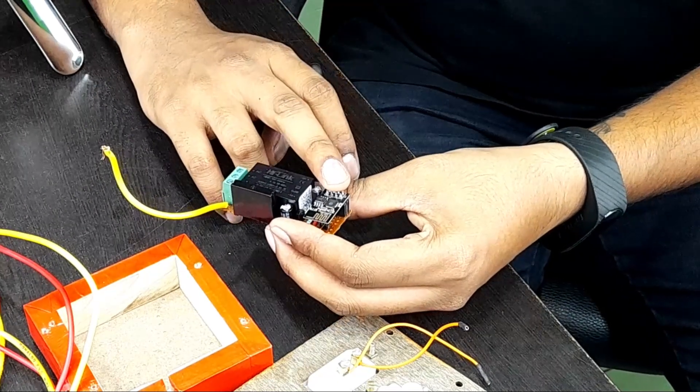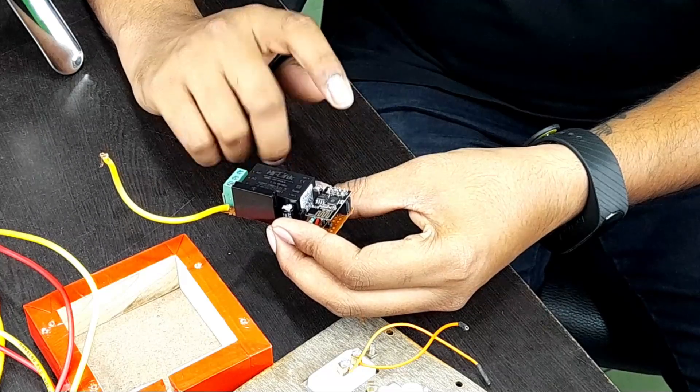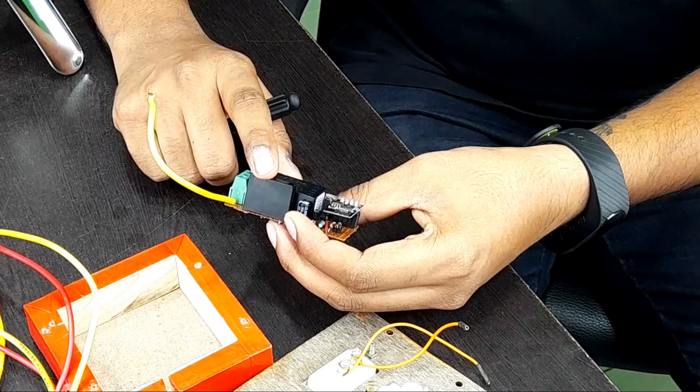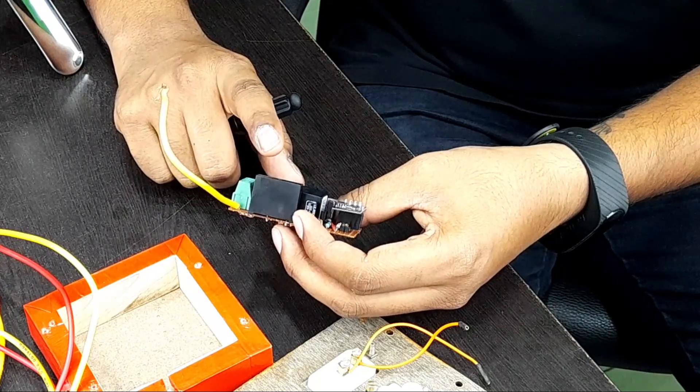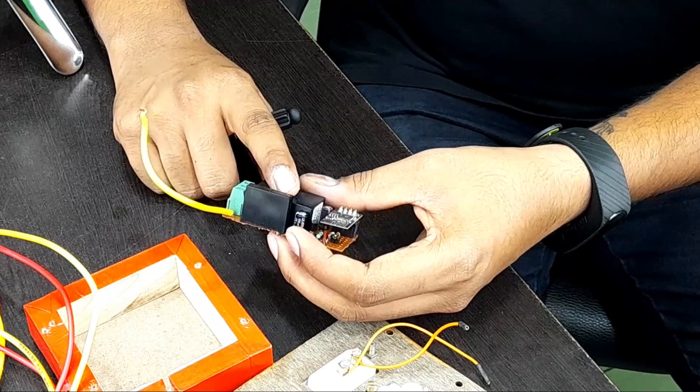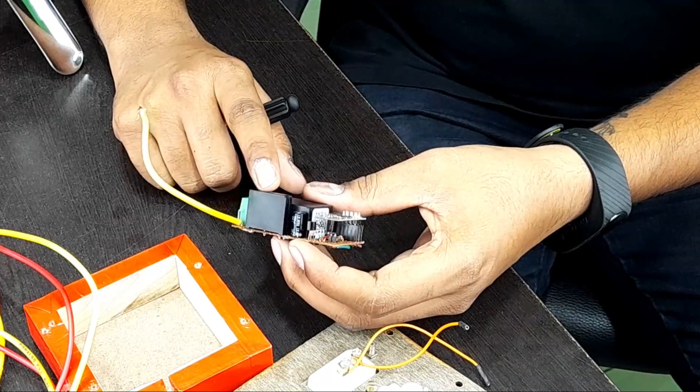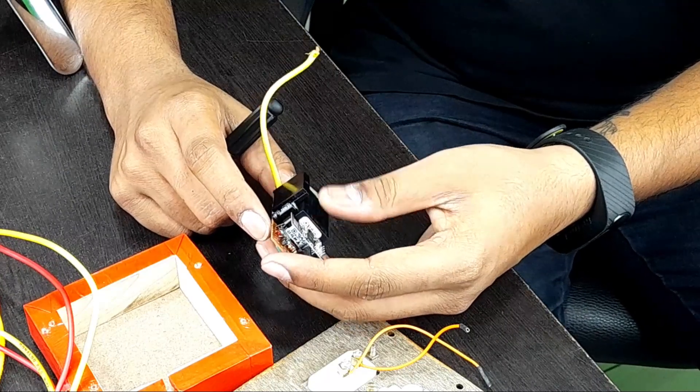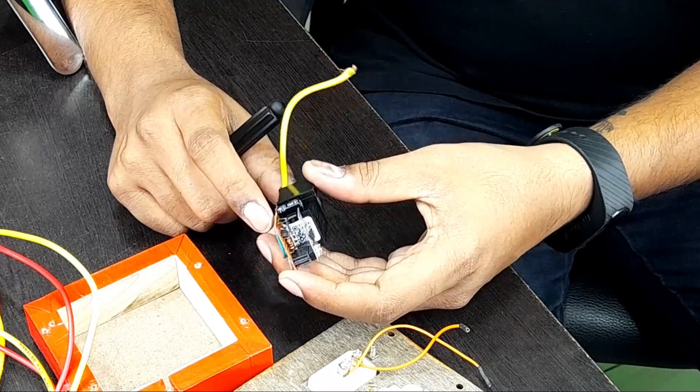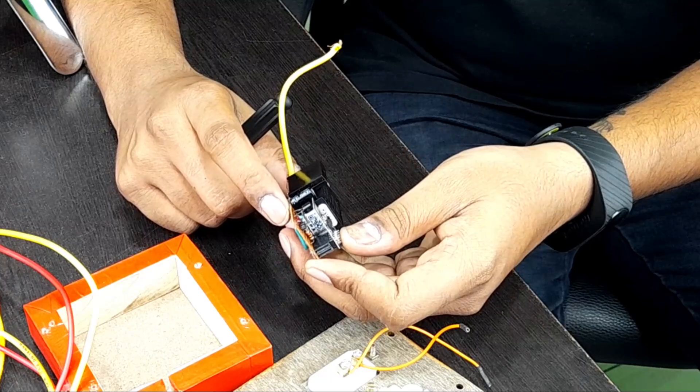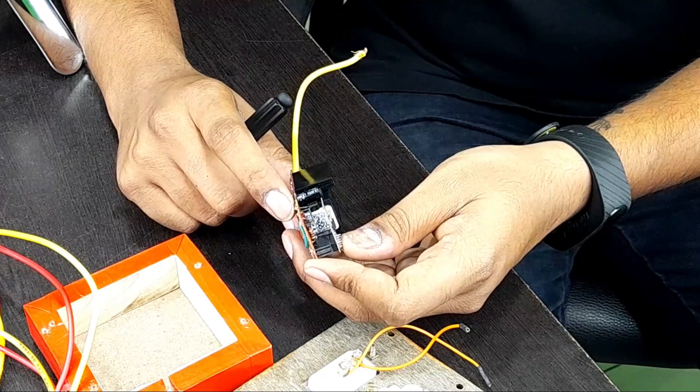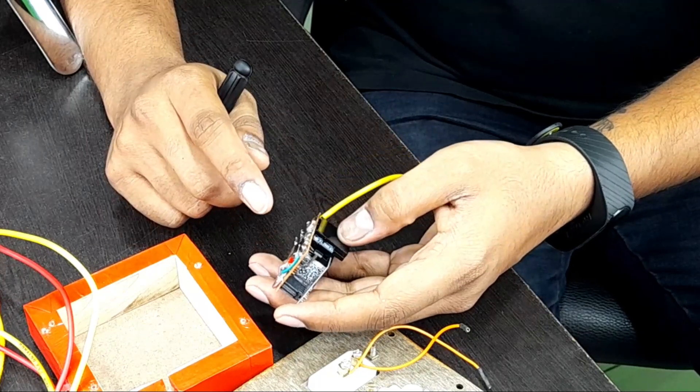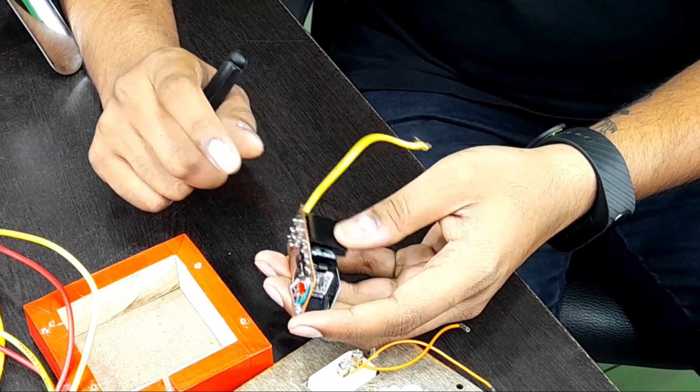That powers the ESP module. To turn the AC load on and off, we're using a solid state relay. For the driver circuit of the relay, we have a PNP transistor, BC557, which is acting as a switch. Once the ESP sends a low signal, the GPIO is set to low, the transistor conducts and it turns the relay on and off.